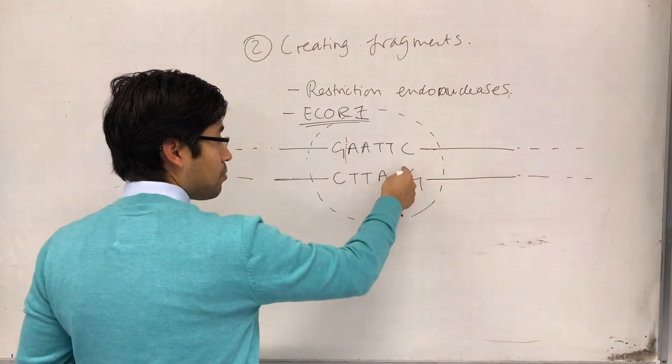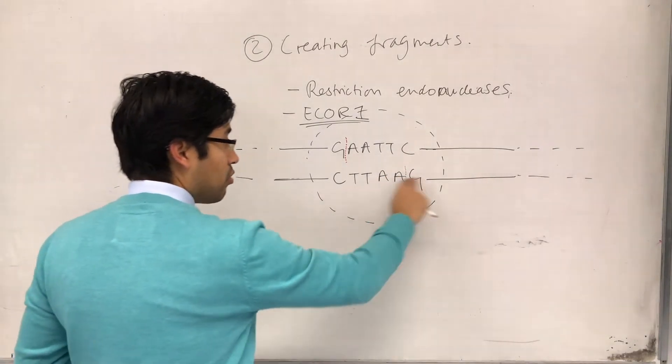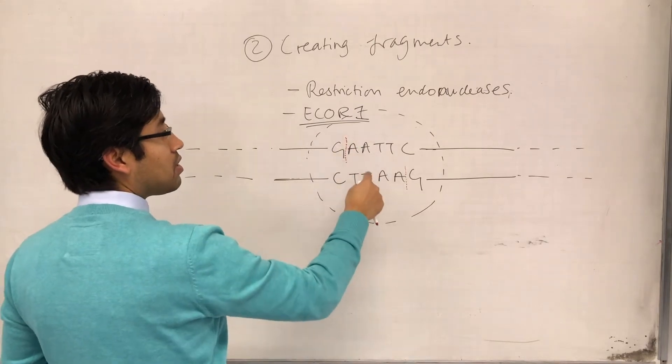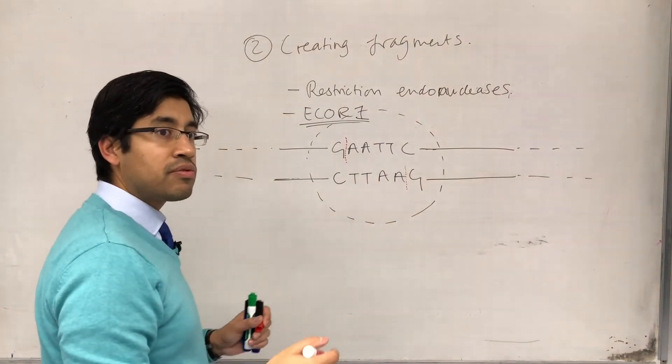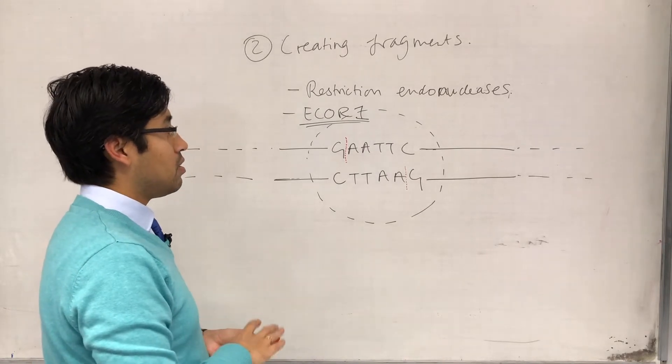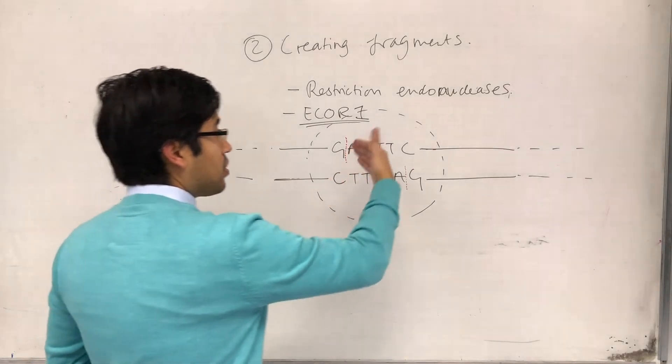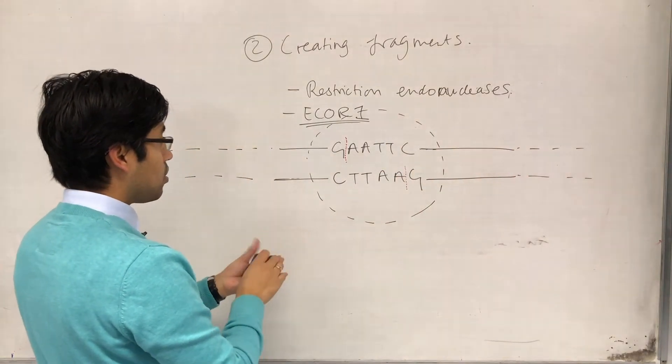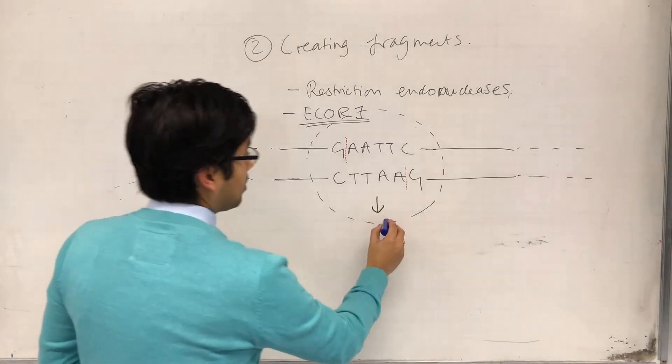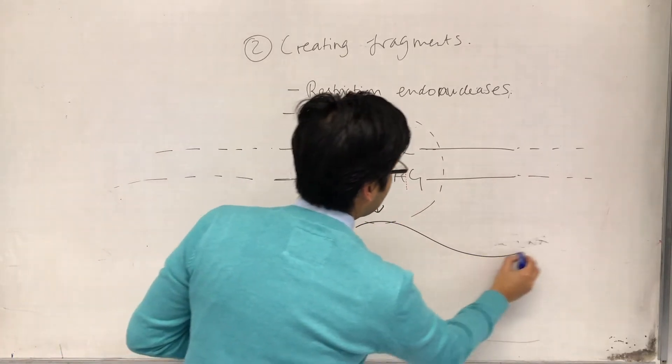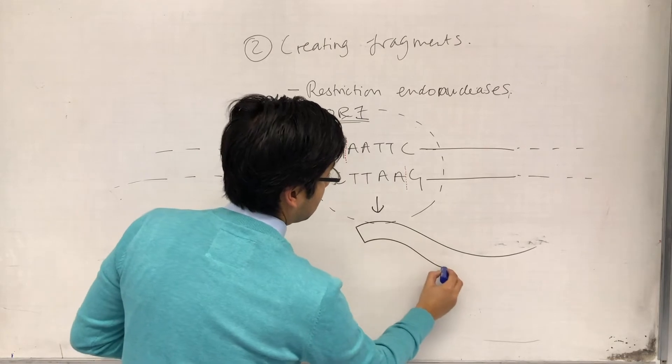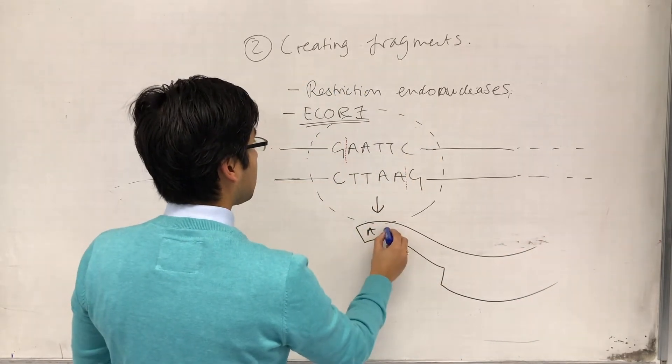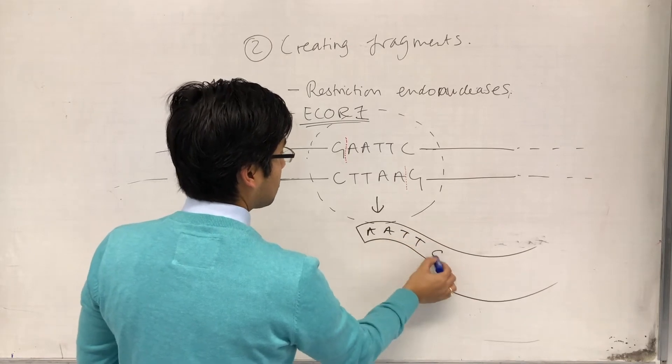Once it breaks that phosphodiester bond, covalent bond, and breaks that covalent bond right there, is there anything holding these two molecules physically together? Then what happens is that these two fragments separate from each other. What will happen is that you'll get one DNA molecule that looks kind of like this, where it's got the A and the A and the T and the T and the C.